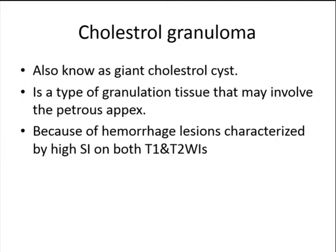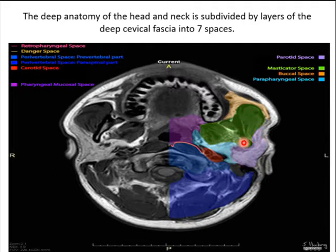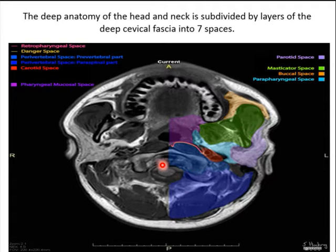The deep anatomy of the head and neck is subdivided by layers of deep fascia into seven compartments or spaces. Knowing these spaces helps narrow the differential diagnosis because each space has only a limited number of pathologies that can affect it. The main spaces include the parotid space, masticator space, buccal space, parapharyngeal space, prevertebral and perivertebral space, and pharyngeal mucosal space.